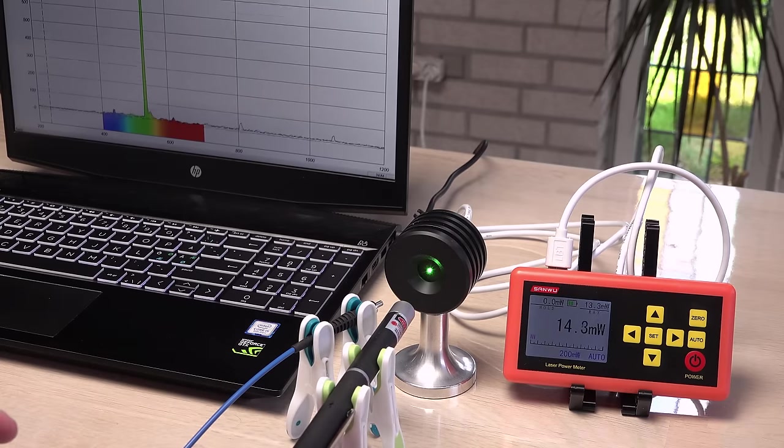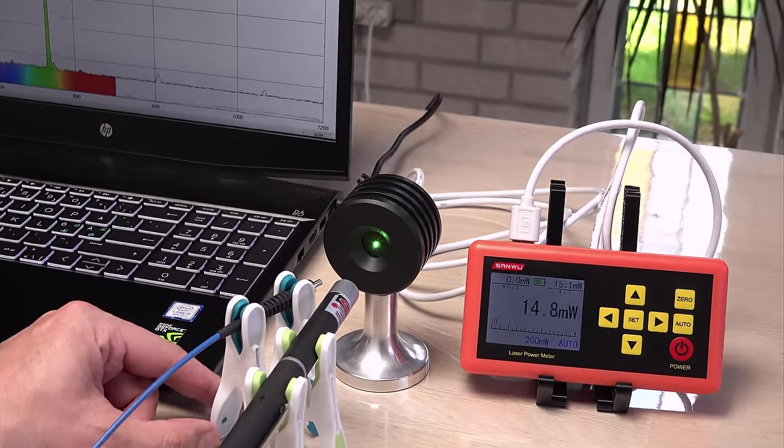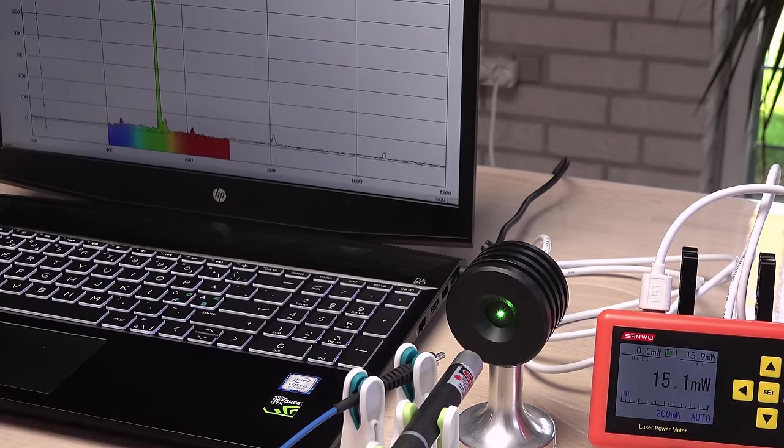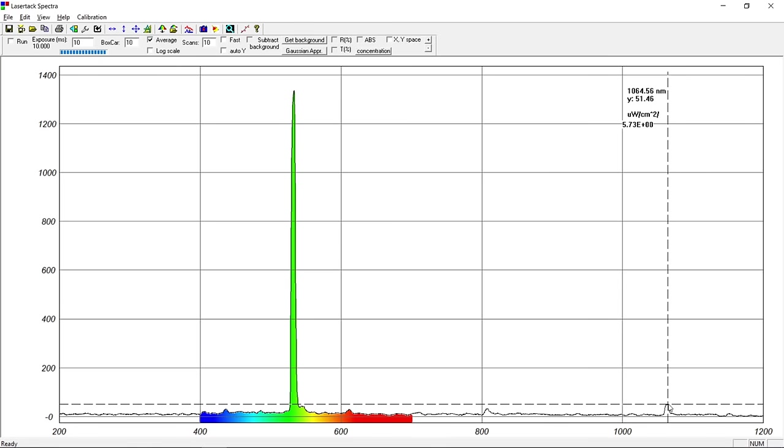There we go! Immediately I spot two safety issues. It is much stronger than the under 5 mW on the label. And it emits invisible infrared light. The classic 808 and 1064 nm from green DPSS lasers.